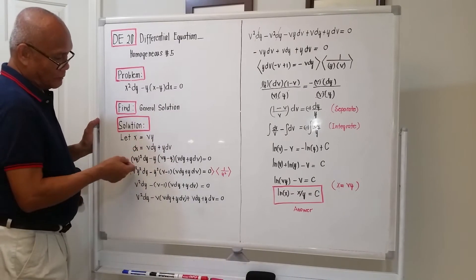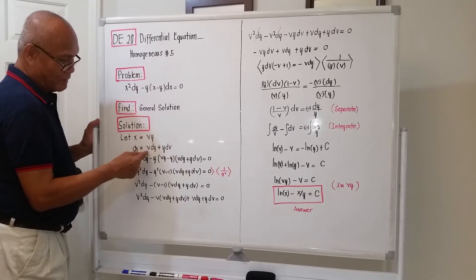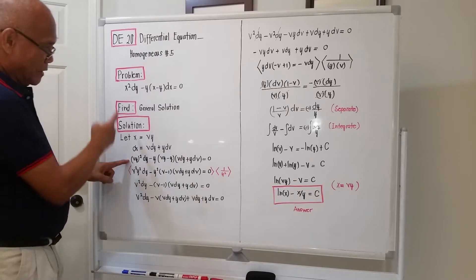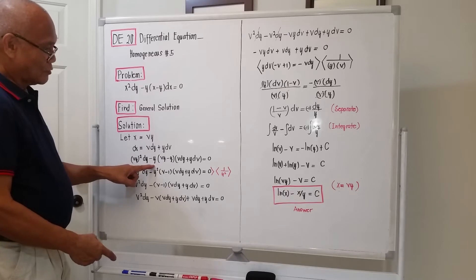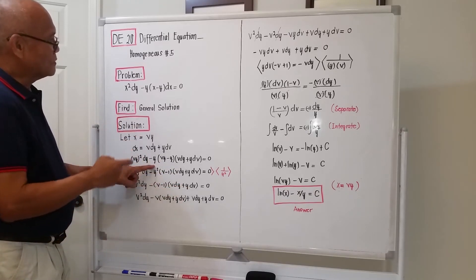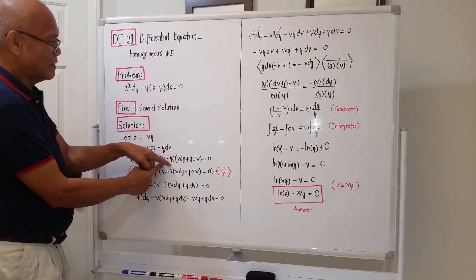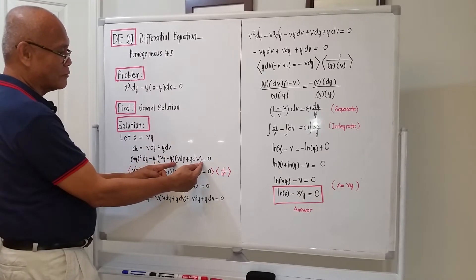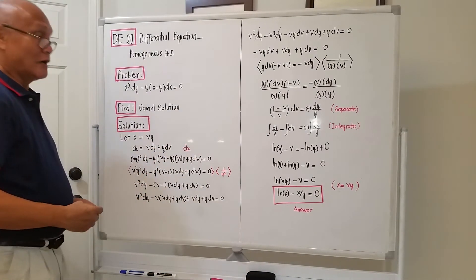We let x equal to vy. Taking the differential of both sides, dx will equal to v dy plus y dv — the first times the differential of the second, plus the second times the differential of the first. We take these two values and substitute into the equation. So x squared becomes (vy) squared, times dy, minus y times the quantity (vy minus y), times dx, where dx equals v dy plus y dv, all set equal to zero.